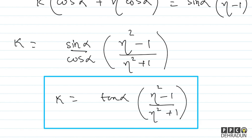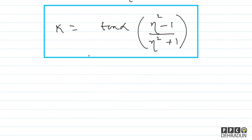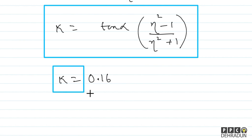This is our final answer. Substituting the given data (alpha = 15°, eta = 2), we get k = 0.16. I hope the solution was clearly understood.